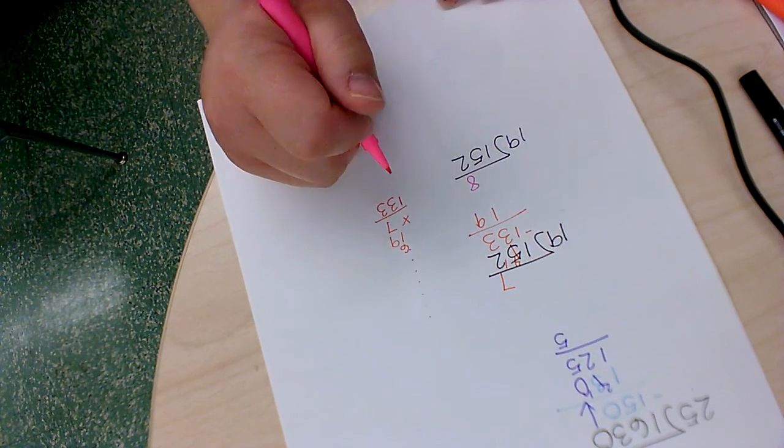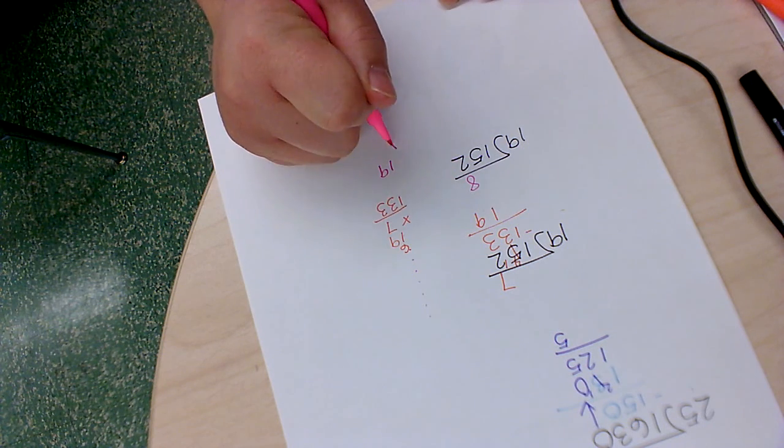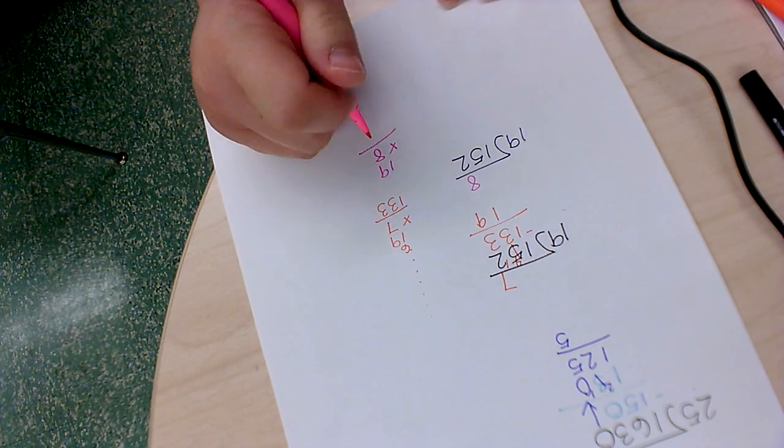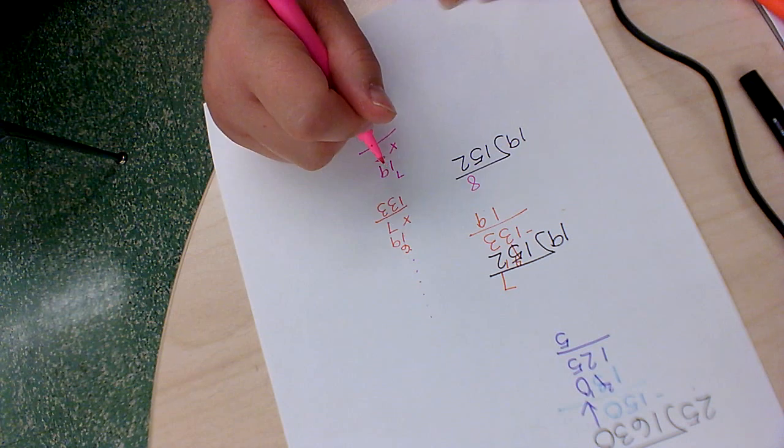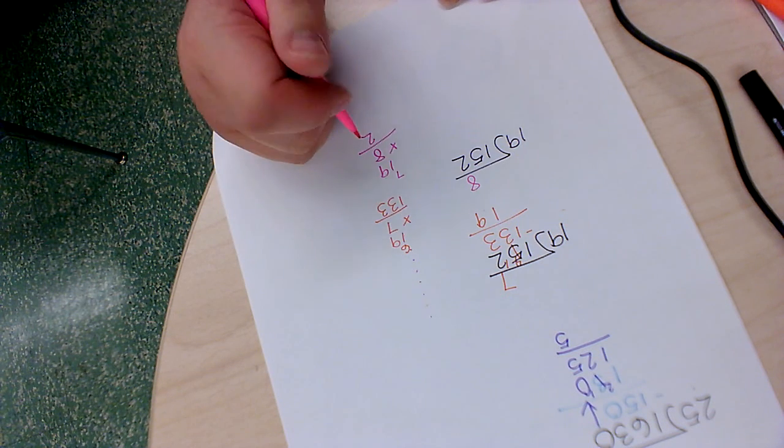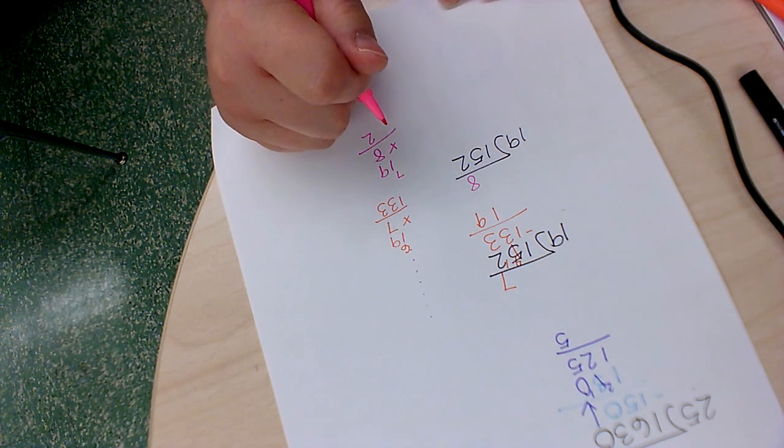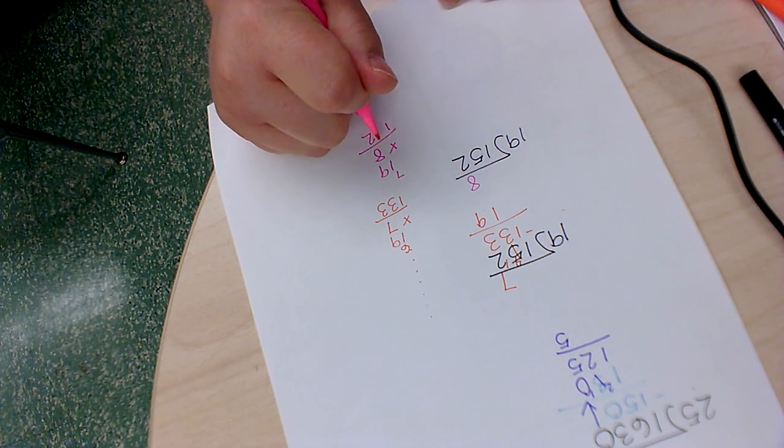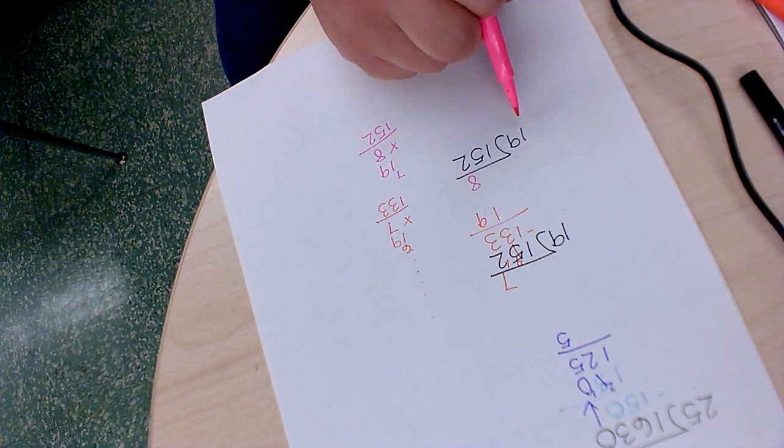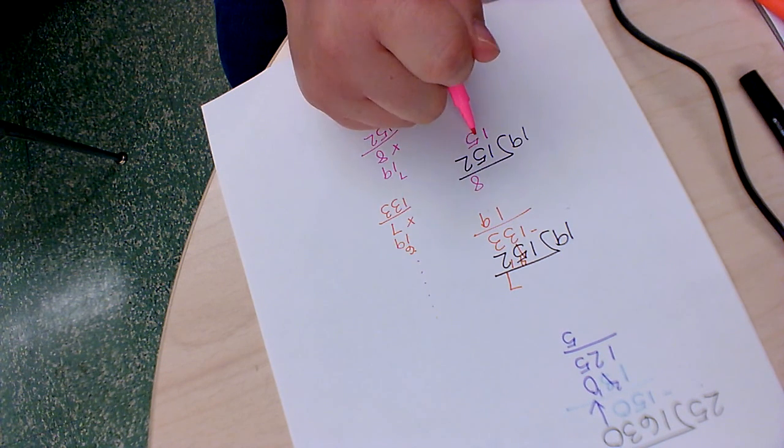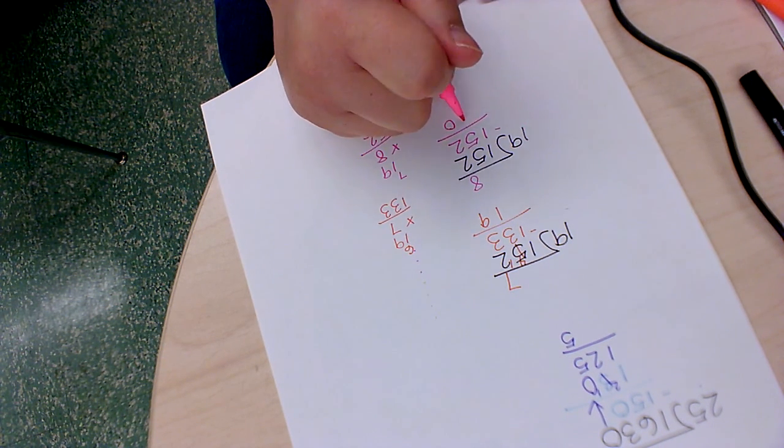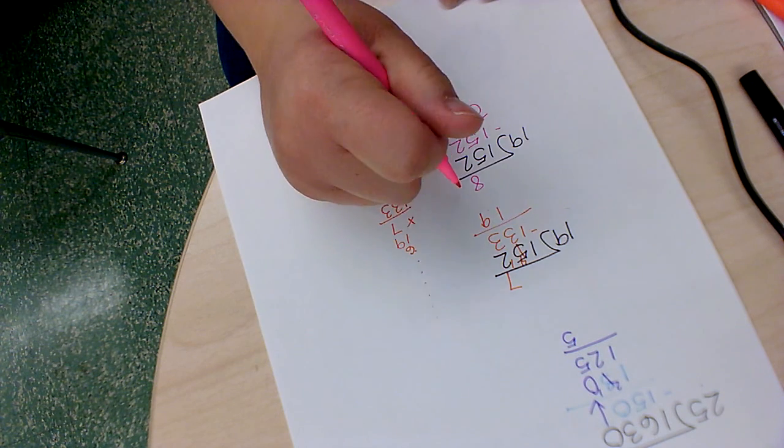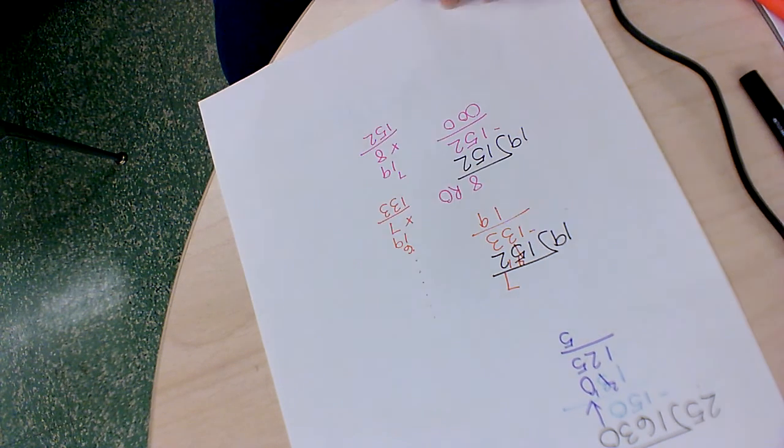And then 8 times 19 is 72. 8 plus 7 would be 15. So 8 times 19 is 152. Now we subtract. 0, 0, 0. So 8 remainder 0.